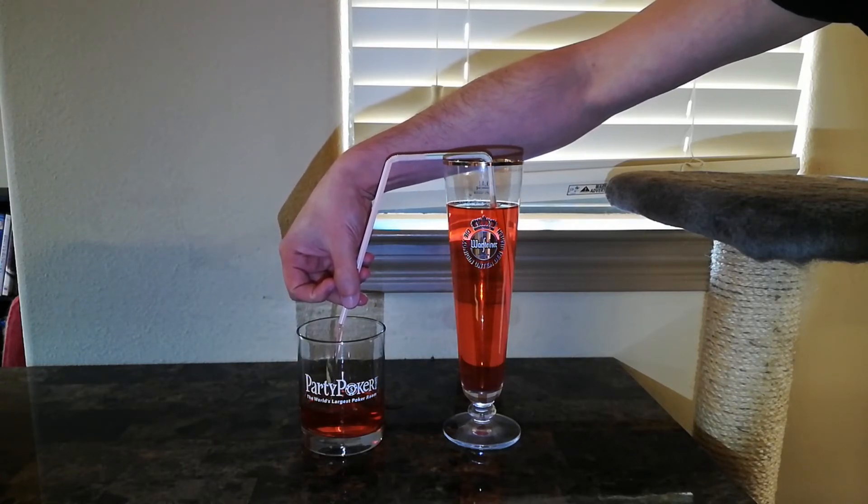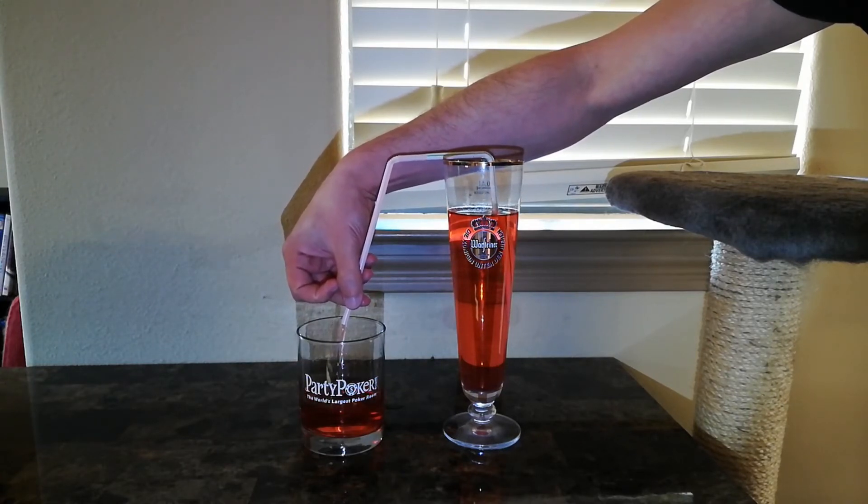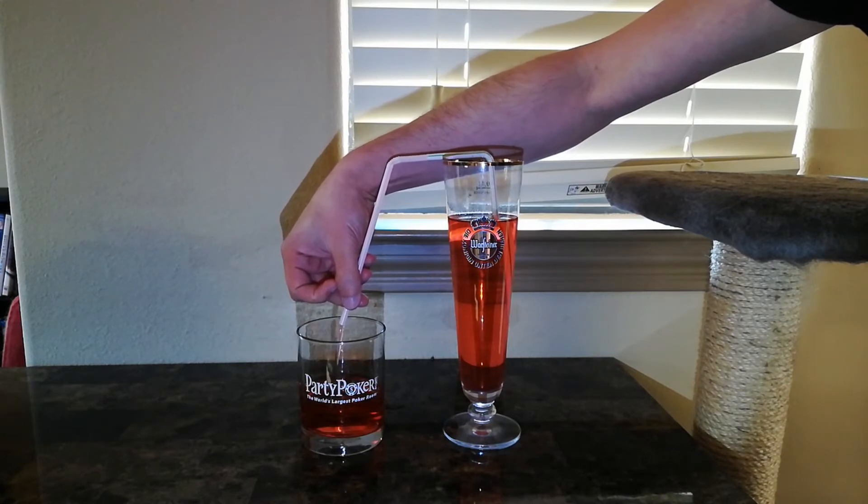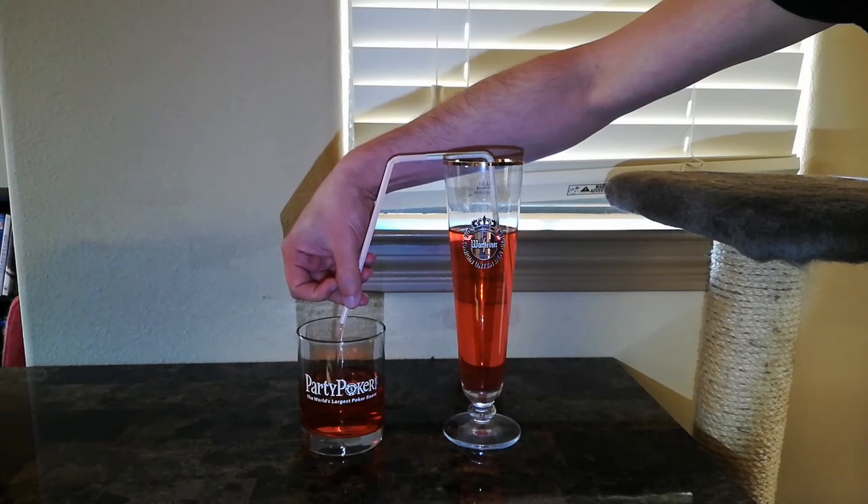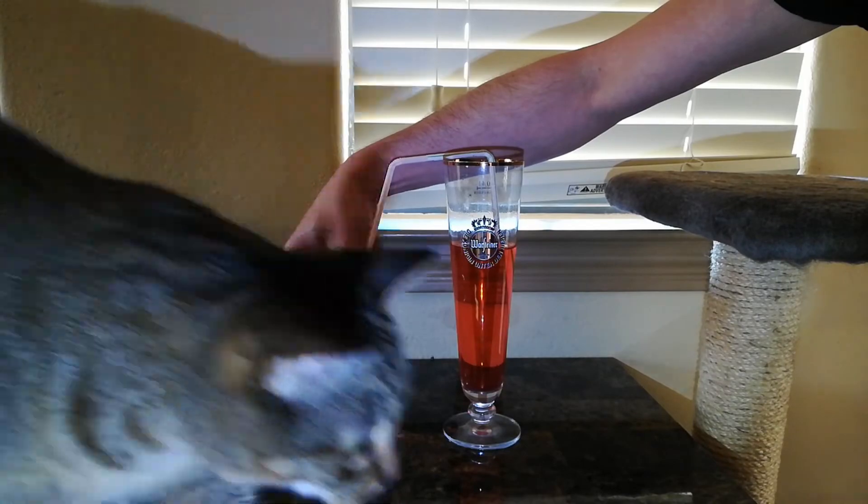So this is the part that everybody gets wrong in the movies, they think that you have to suck to create a vacuum to get liquid into the tube. Not true at all, you just insert the tube into the liquid, and then you can close off the end, and with the end sealed, no air can get in, and the liquid won't fall out of the tube as you reposition.